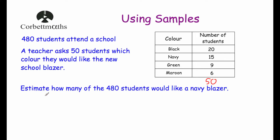We've been asked to estimate how many of the 480 students would like a navy blazer. In this question we're going to assume that the sample results are representative of the entire population, meaning the opinions of these 50 students represent the opinions of all 480 students.